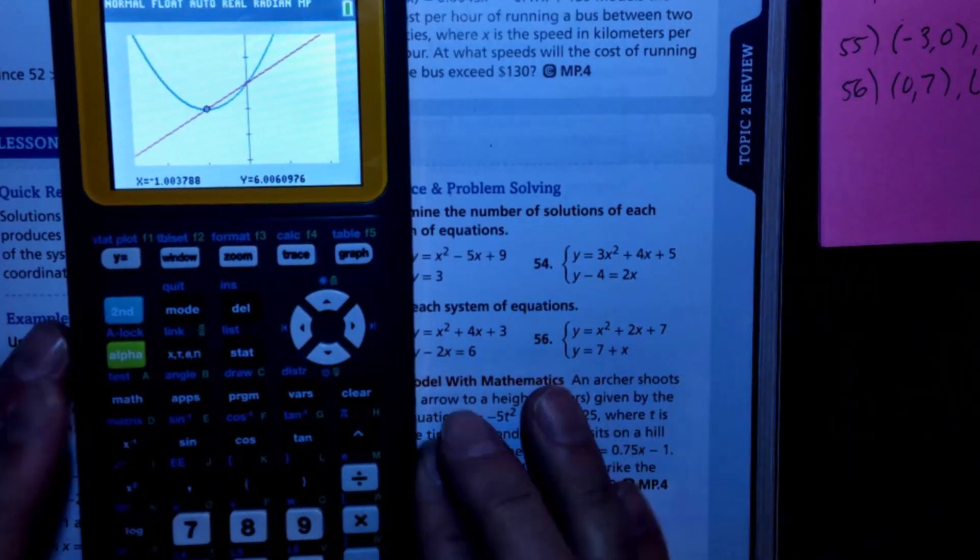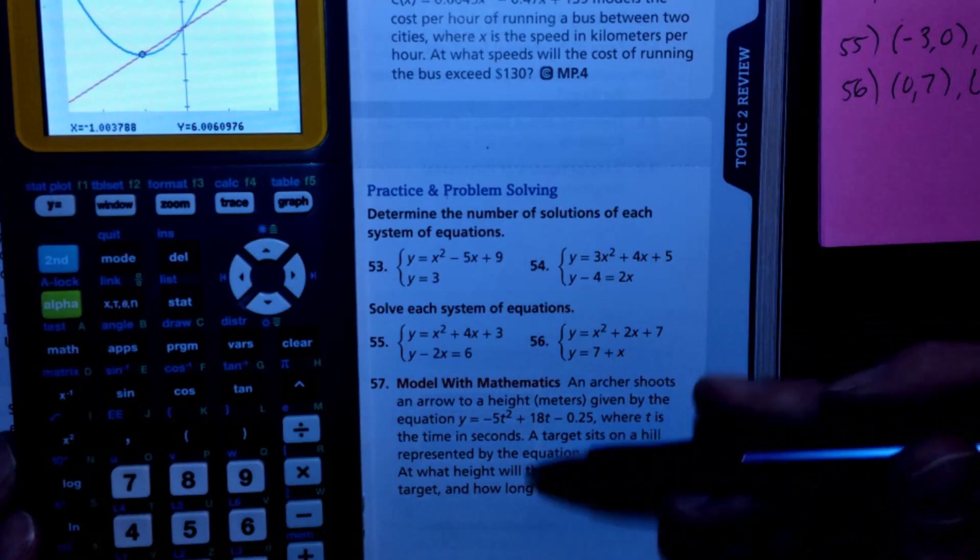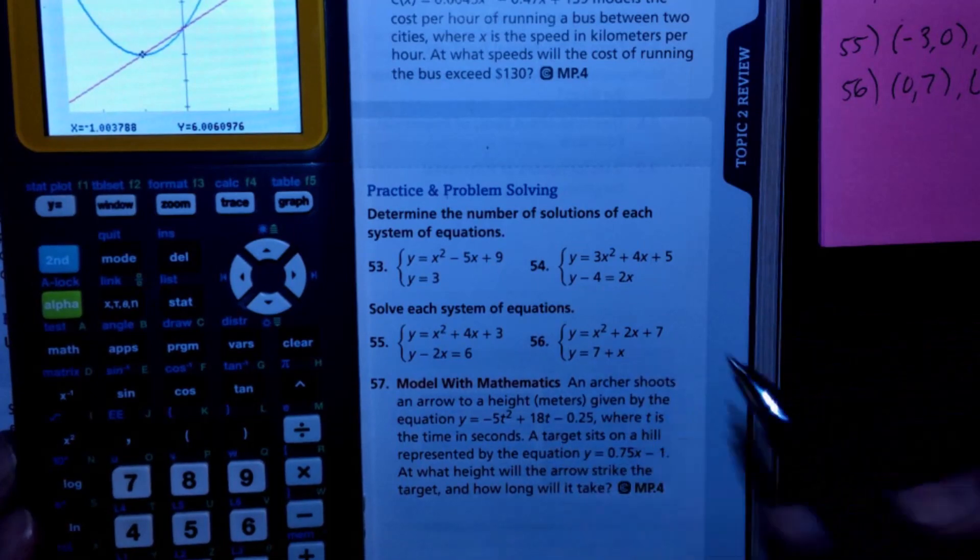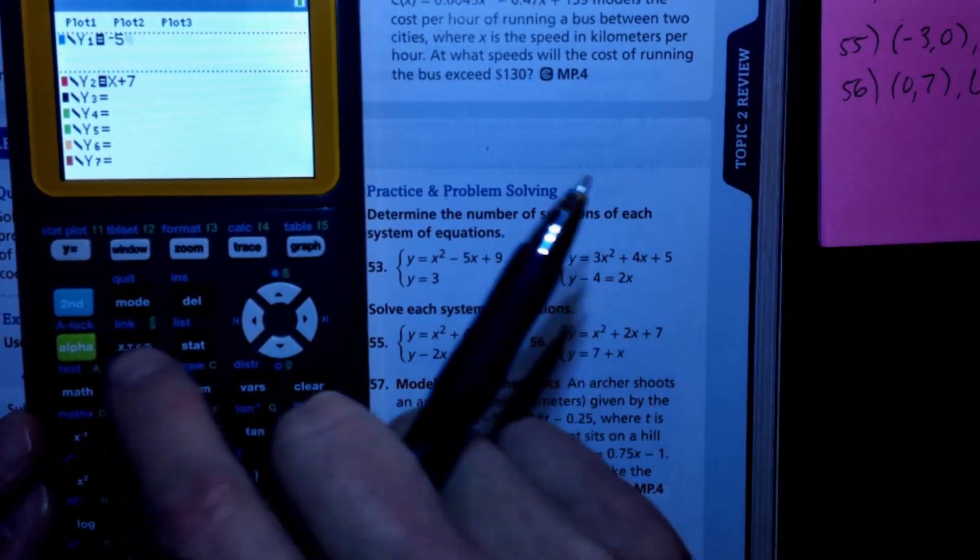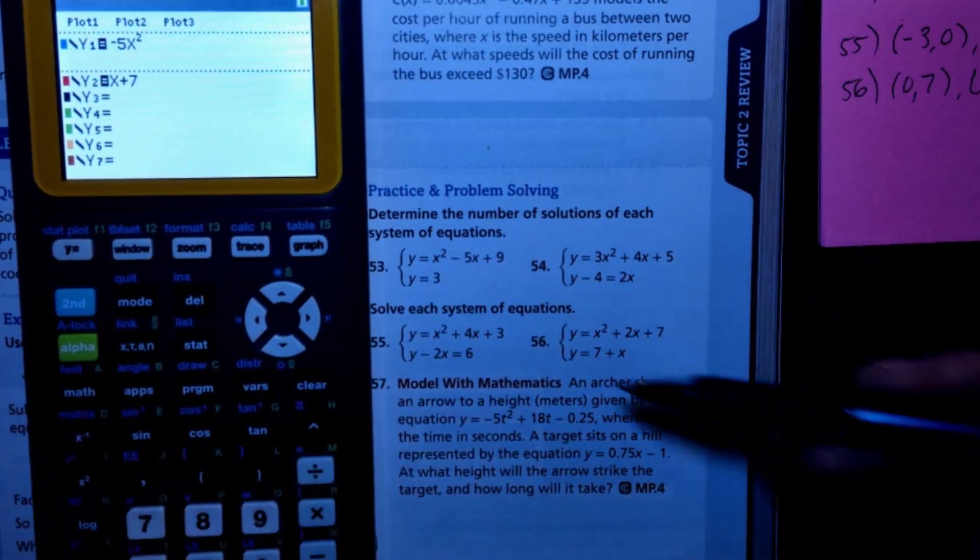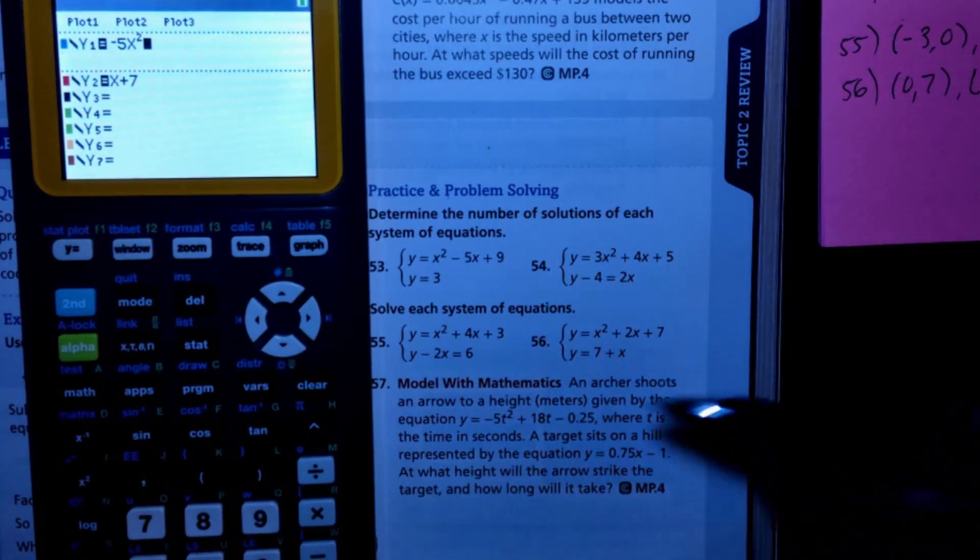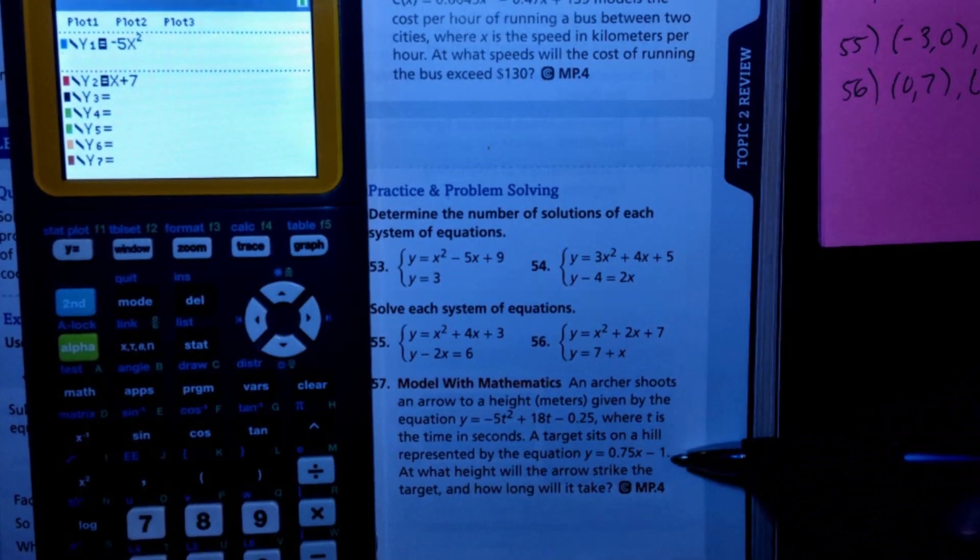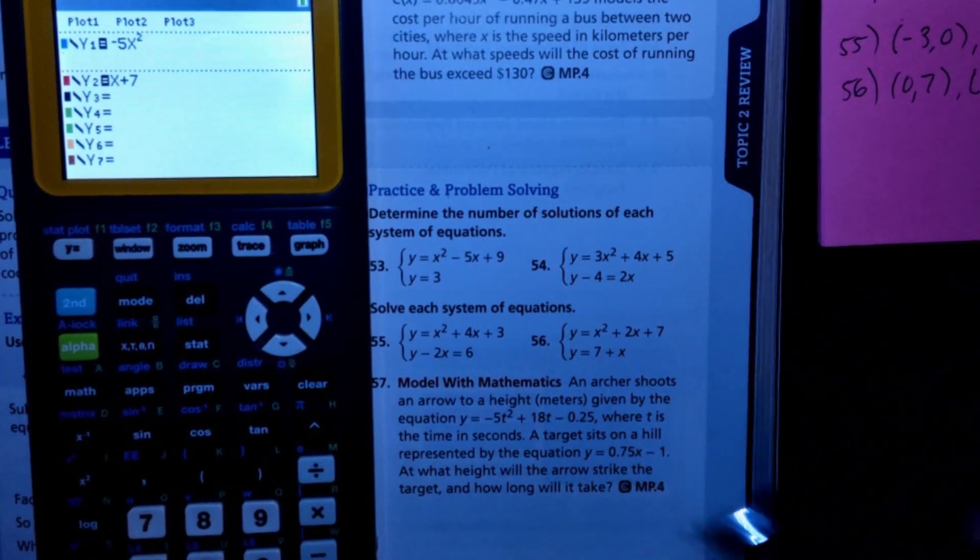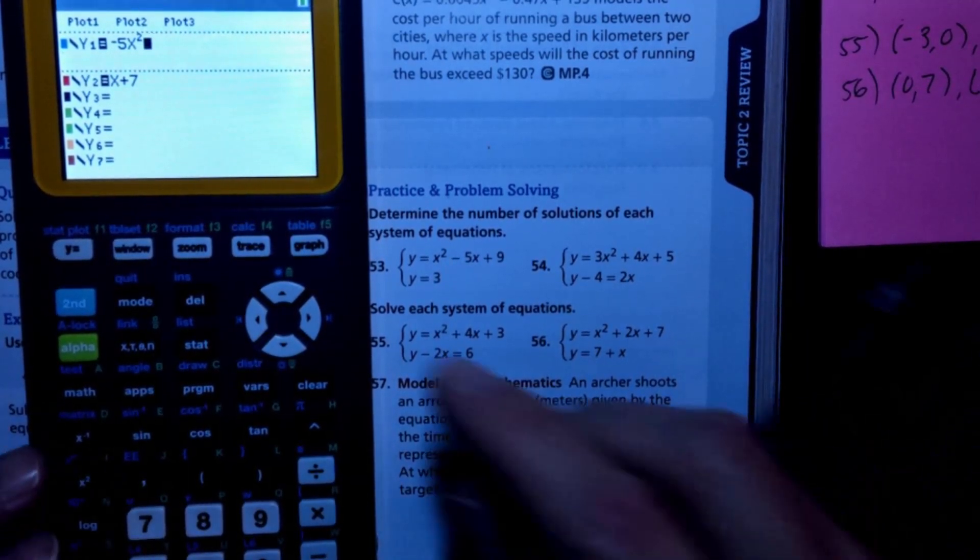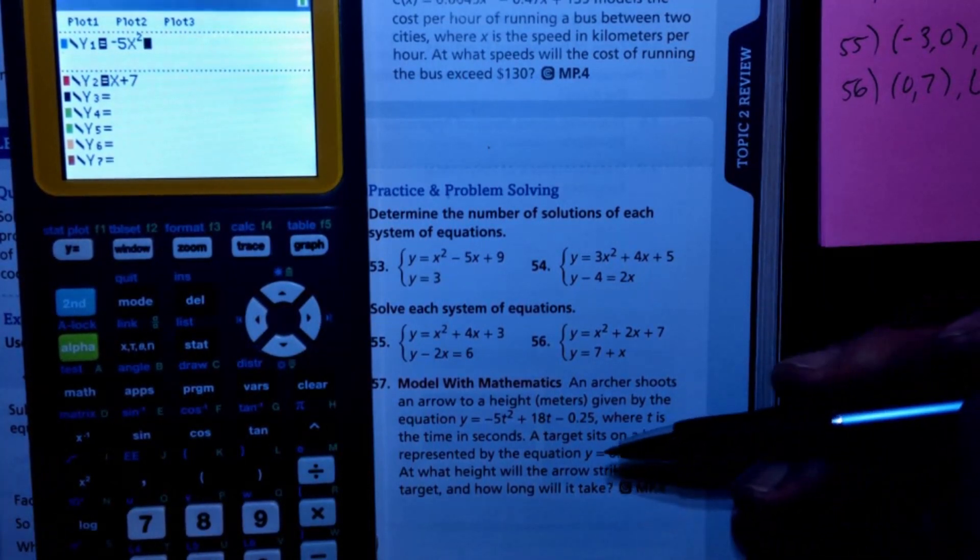All right, that's it. Okay, same thing with 57. I don't know if I had you do that, but just decimals, whatever, it doesn't matter. Like this is just a model that they used, so I'm just going to stick to it. I'm going to clear that out, go negative 5x squared. I didn't even read it. I just know that an archer shoots an arrow to a height given by the equation, so it's a parabola. t is time in seconds. The target sits on a hill represented by the equation here, so that's how it's sitting on the hill. At what height will the arrow strike the target, and how long will it take? It wants the x and the y coordinate, so the y is going to be how high, and the x is actually the t, which is time.